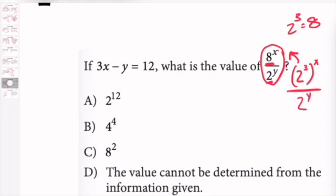Now I can combine this and I can make this since it's the same base. I have 2 here and I have 2 here. So I can just make this 2 to the 3x minus y using my exponent rules.